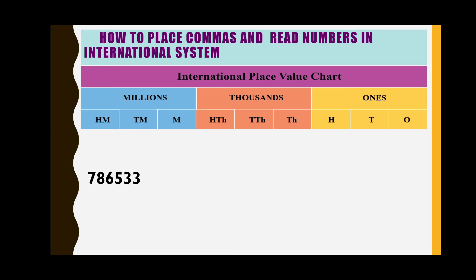Let us see how to read numbers in the international system using the example 786533. We write the number according to place values starting from the right: three is ones, three is tens, five is hundreds, six is thousands, eight is ten thousands, and seven is hundred thousands.